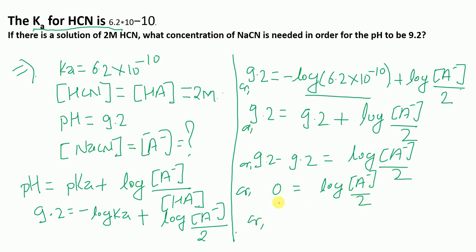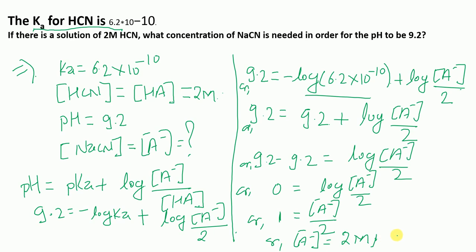Since [A⁻]/2 = 1, the concentration of A⁻ (which is NaCN) = 2 molar. The concentration of NaCN required is 2 molar. I hope this video was helpful. Thank you very much for your attention. Please subscribe to our channel for more content.